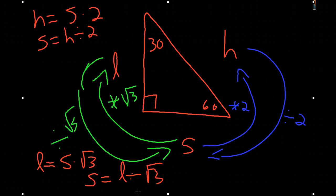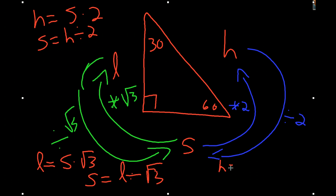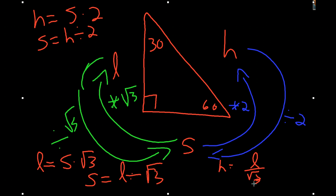You could also write a new equation that the hypotenuse equals the long leg divided by the square root of 3, times 2.